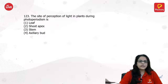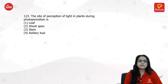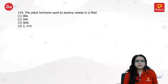The site of perception of light in plants during photoperiodism — whenever you talk about light, it is always caught by the leaf. It is always the leaf where photosynthesis and light perception are happening, unless it is a special case.